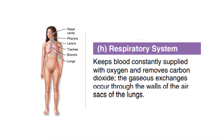The respiratory system keeps the body supplied with oxygen and removes carbon dioxide. It consists of nasal passages, pharynx, larynx, trachea, bronchi, and lungs. Within the lungs are tiny air sacs. Gases are exchanged with blood through the thin walls of these air sacs.